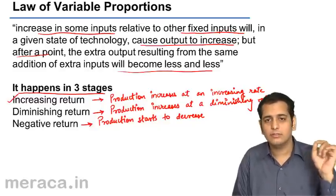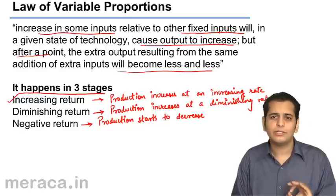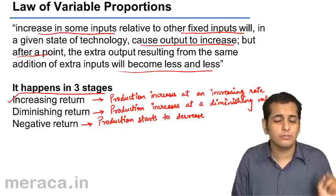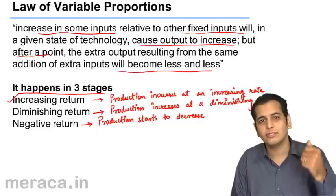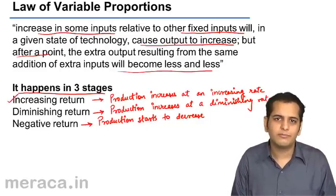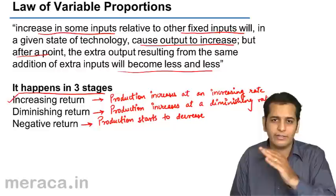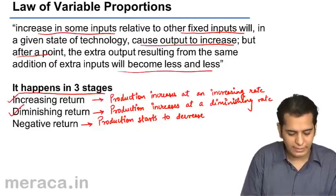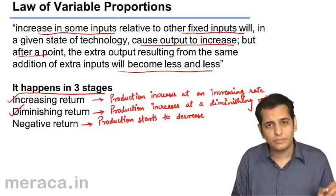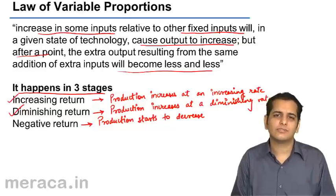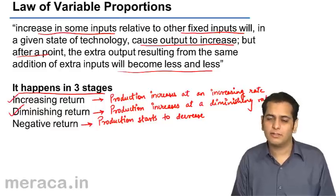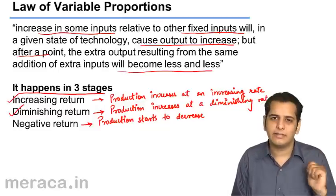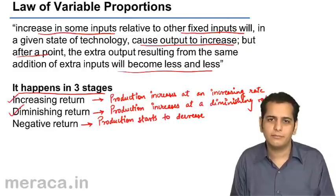We have three stages. In the first stage, the stage of increasing returns, production is increasing — not only increasing, but increasing at an increasing rate. With each additional unit of variable factor of production, production increases, and adding one more unit causes it to increase at an even higher rate. In the second stage, the stage of diminishing returns, production still increases when an additional unit of variable factor — labor in our case — is employed, but it does not increase at the same rate as when the previous unit was added.